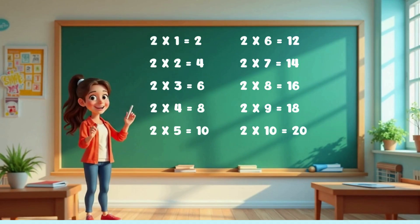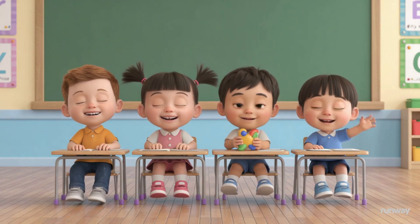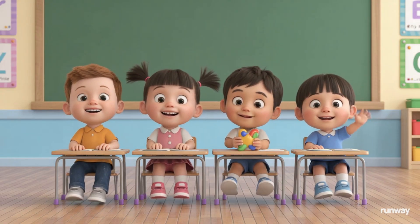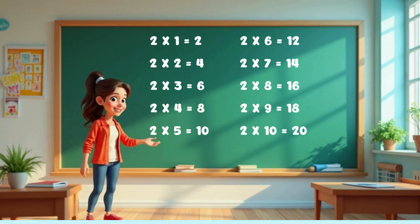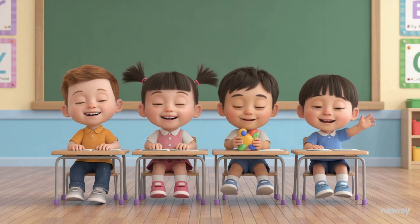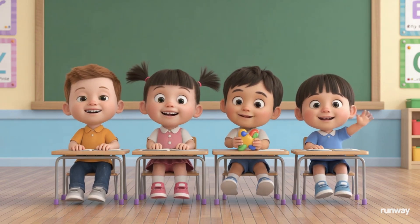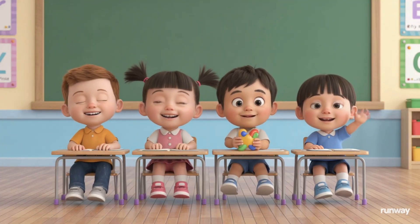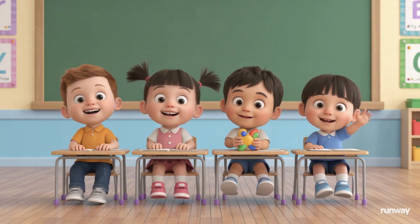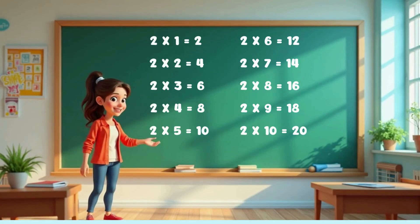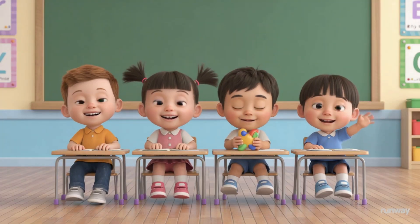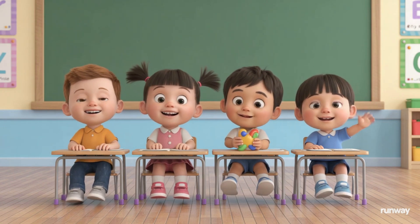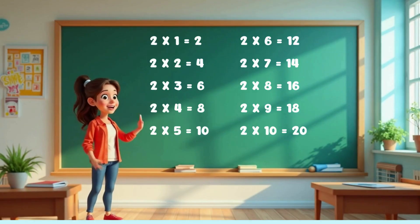Two one's are two. Two two's are four. Two three's are six. Two four's are eight. Two five's are ten. Two six's are twelve. Two seven's are fourteen. Two eight's are sixteen. Two nine's are eighteen. Two ten's are twenty.